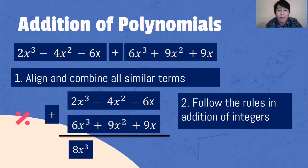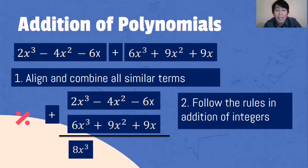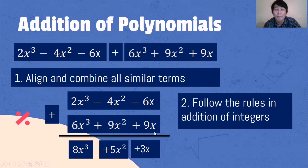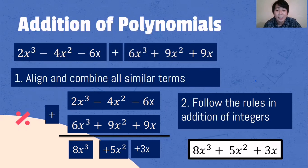2x cubed plus 6x cubed is 8x cubed. Negative 4x squared plus 9x squared — we have different signs, so we subtract then follow the sign of the higher absolute value — that is 5x squared. We also have different signs for negative 6x and 9x, so we subtract then follow the sign of the higher absolute value: negative 6x plus 9x is 3x.